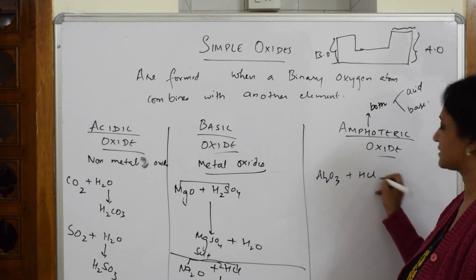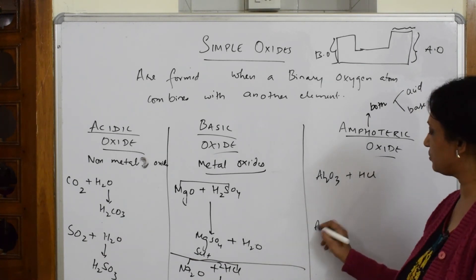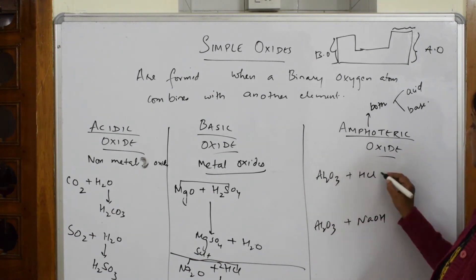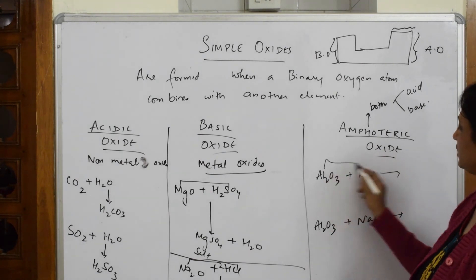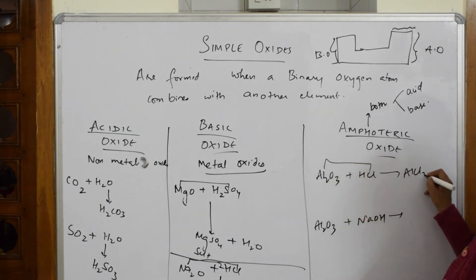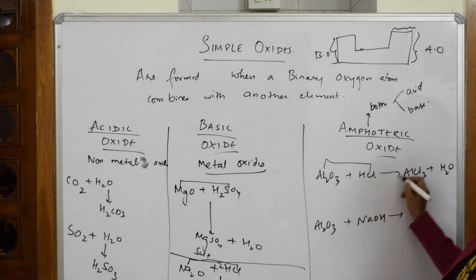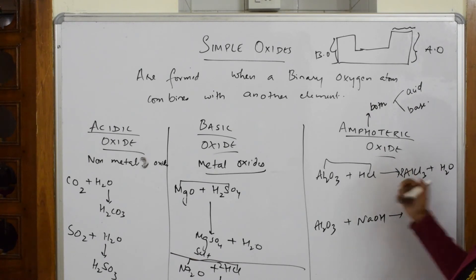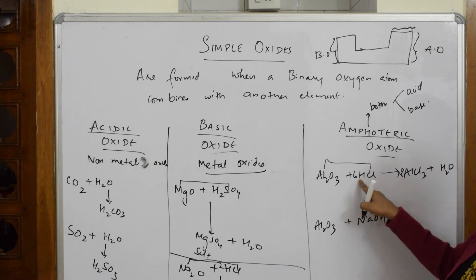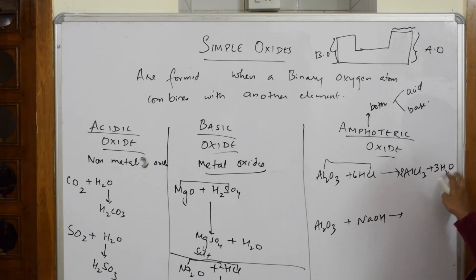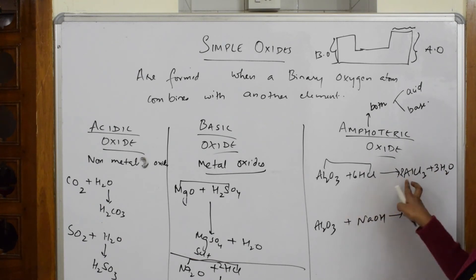Taking Al2O3 with an acid — say HCl — it is going to form aluminium chloride AlCl3 and water. Balancing: aluminium is 2, so write 2AlCl3 — that gives 6 chlorines, so we need 6HCl. Oxygen is 3, hydrogen is 6, so we write 3H2O. Checking: Al is 2 balanced, Cl is 6 balanced, O is 3 balanced, H is 6 balanced. Done.